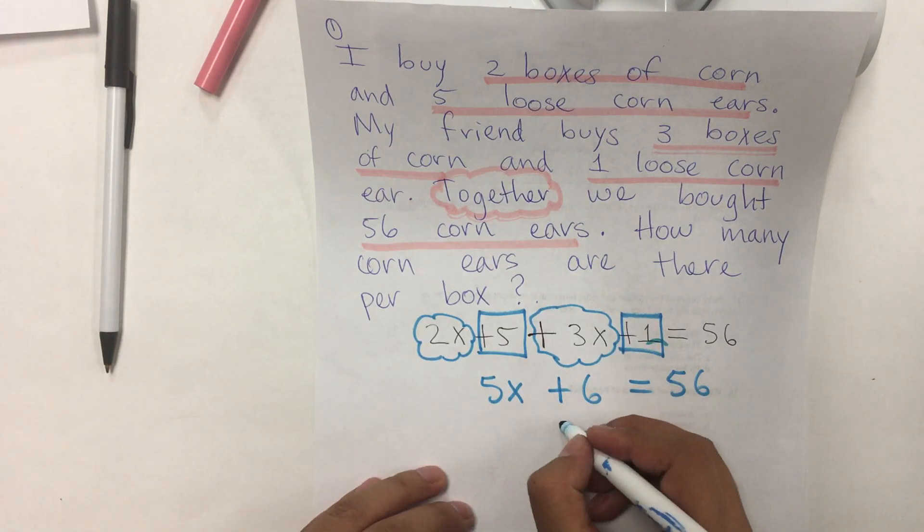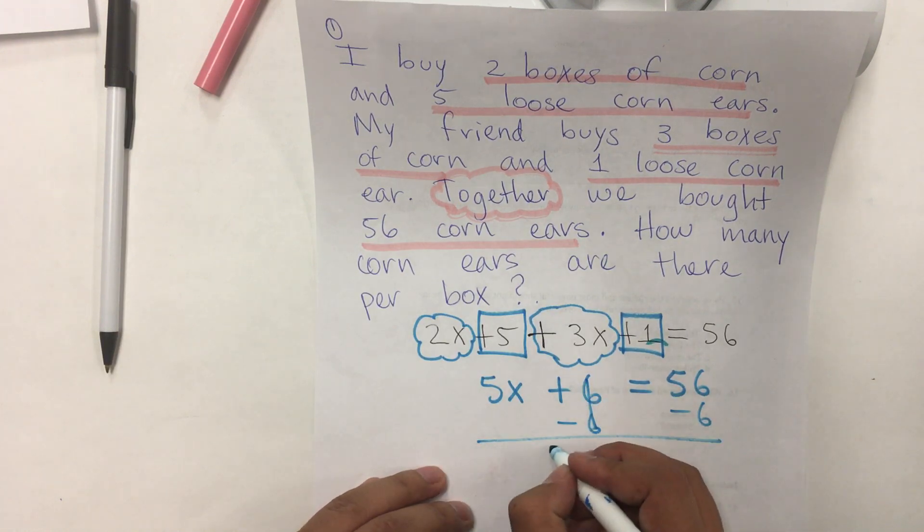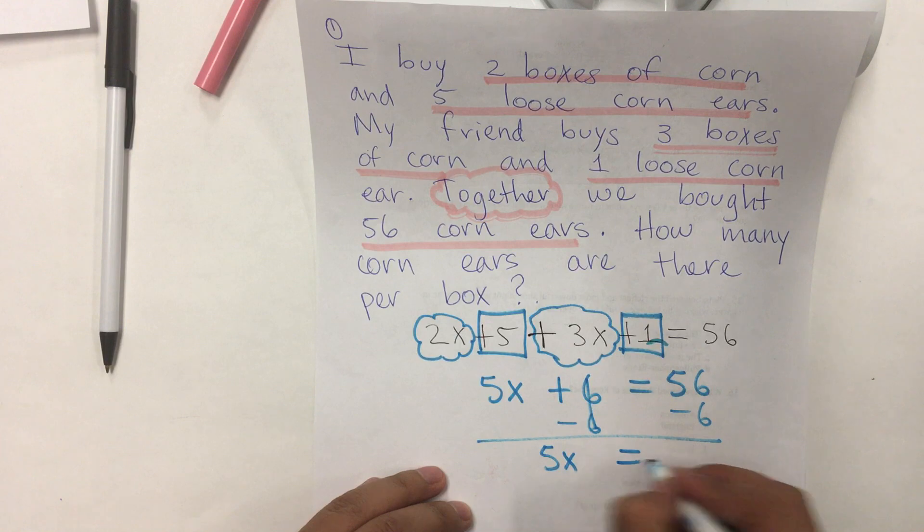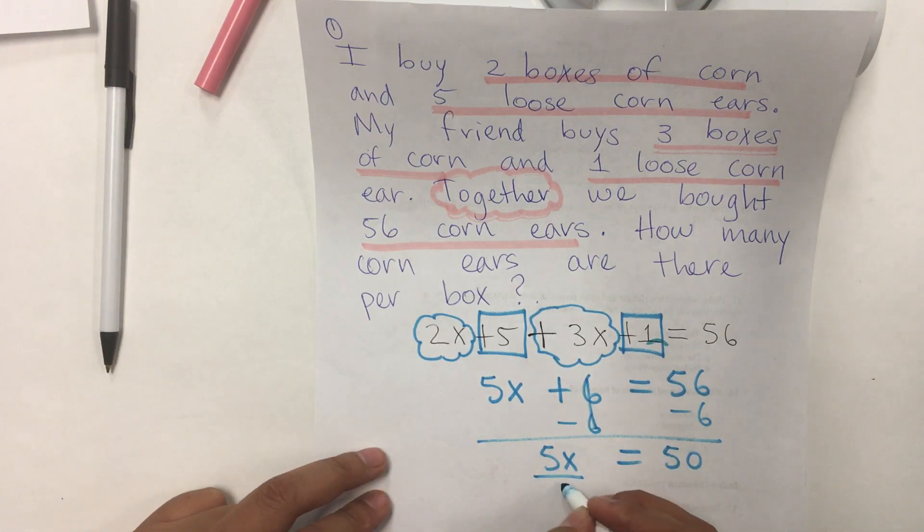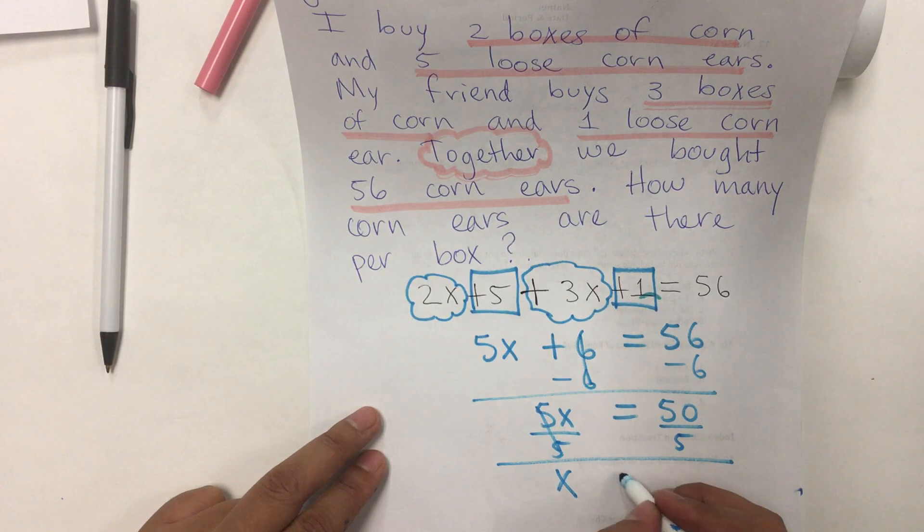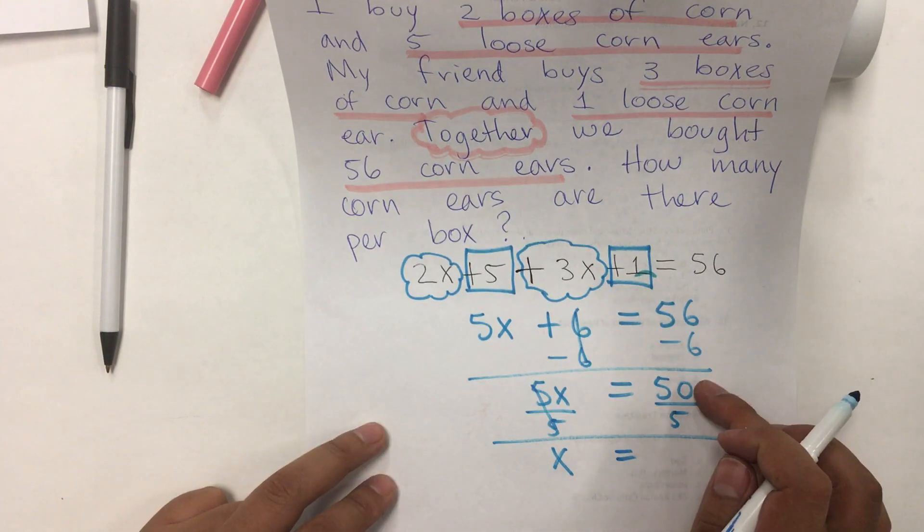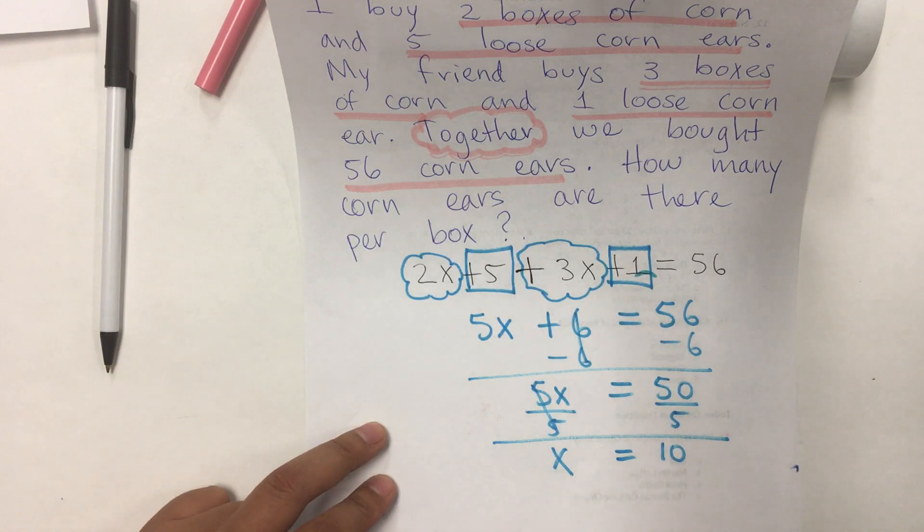Then, we're going to subtract 6 from both sides. So, we have 5x equals 56 minus 6 is 50. And that means that in the five boxes, we have 50 corn ears. We divide by 5. So, x is equal to 50 corn ears divided by the five boxes. Each box has 10 corn ears.